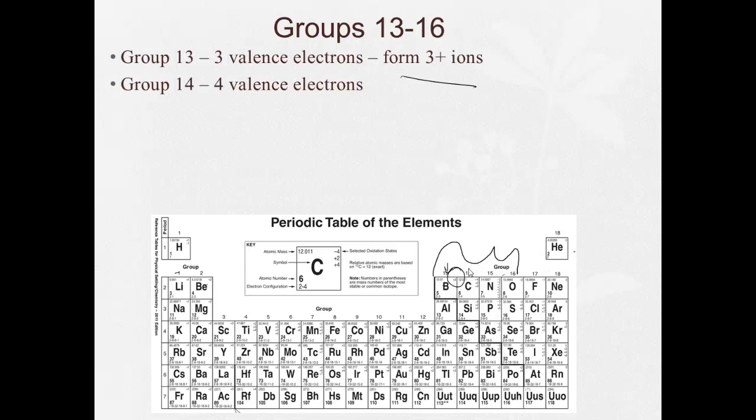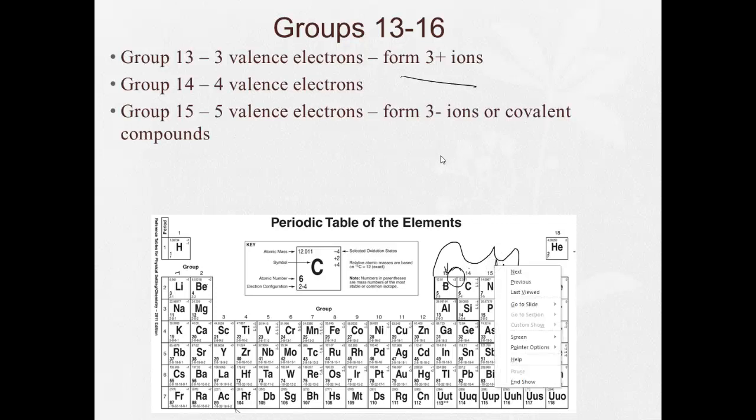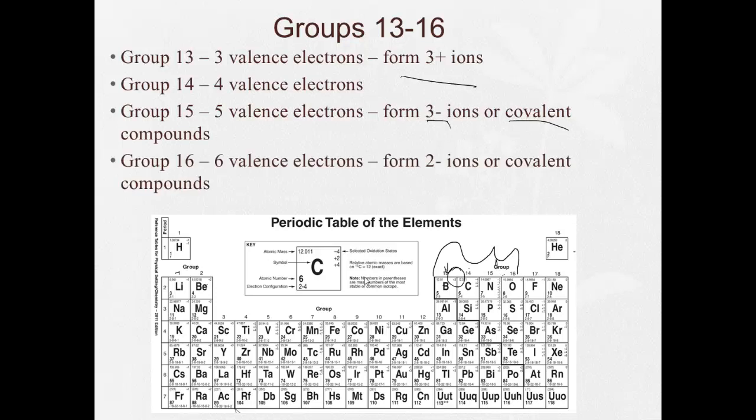Group 14 has 4 valence electrons. Now we're getting into things that will go either way or be more likely to form just covalent bonds. They're not going to tend to form ions. Group 15 has 5 valence electrons. So it'll either form, if it's lucky, a -3 ion or more likely than not covalent bonds.